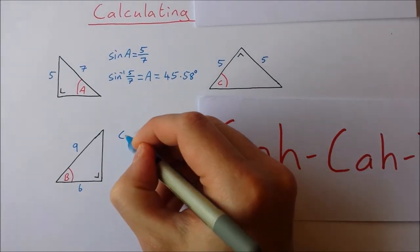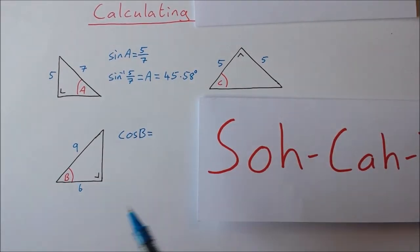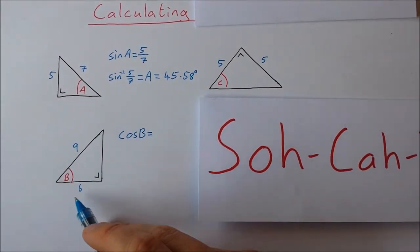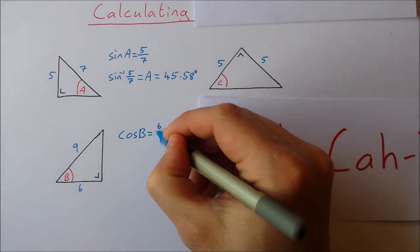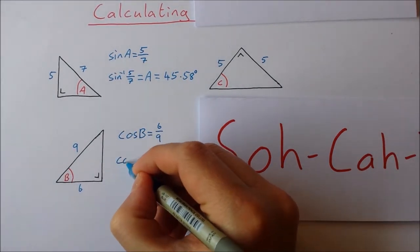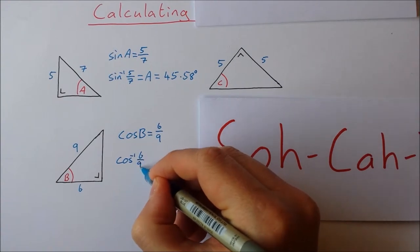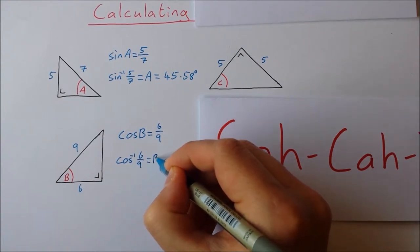So here the cos of B is adjacent over hypotenuse. So that's 6 over 9. Now the way I do this is I do cos inverse of 6 over 9. That will give me my angle B.